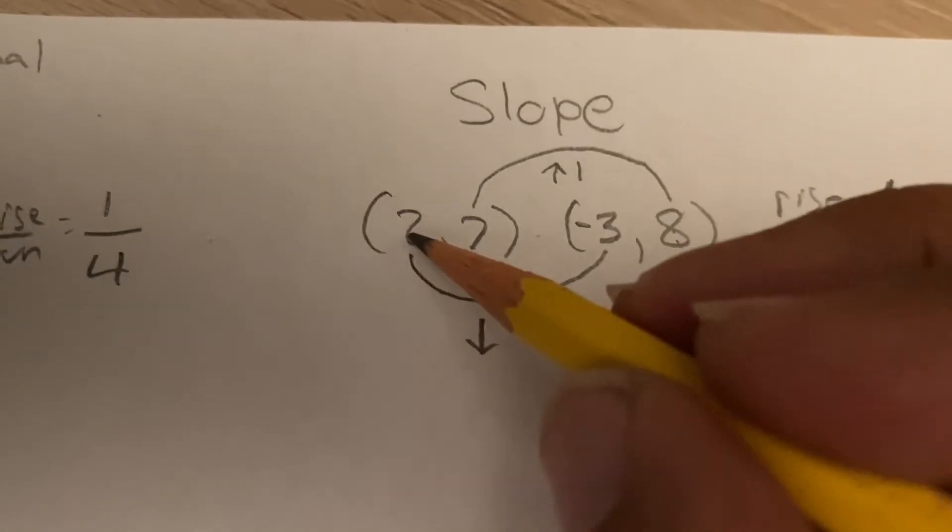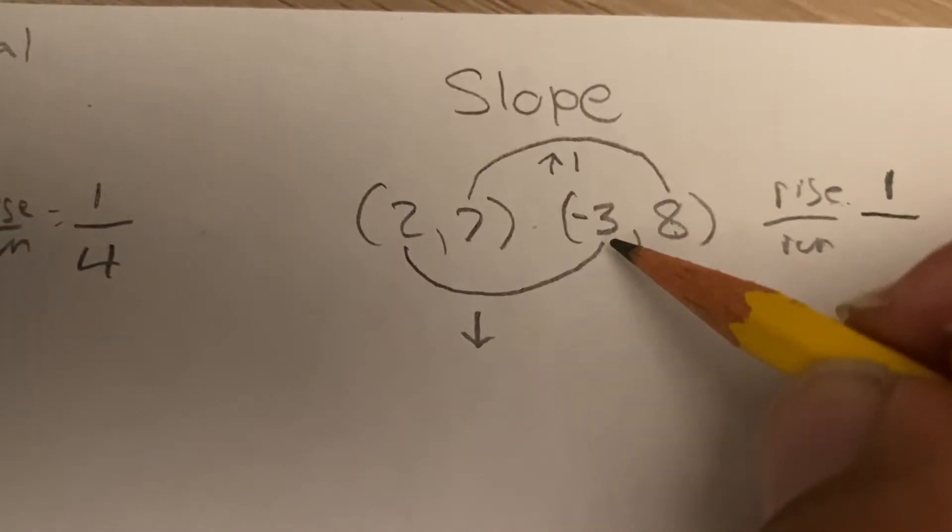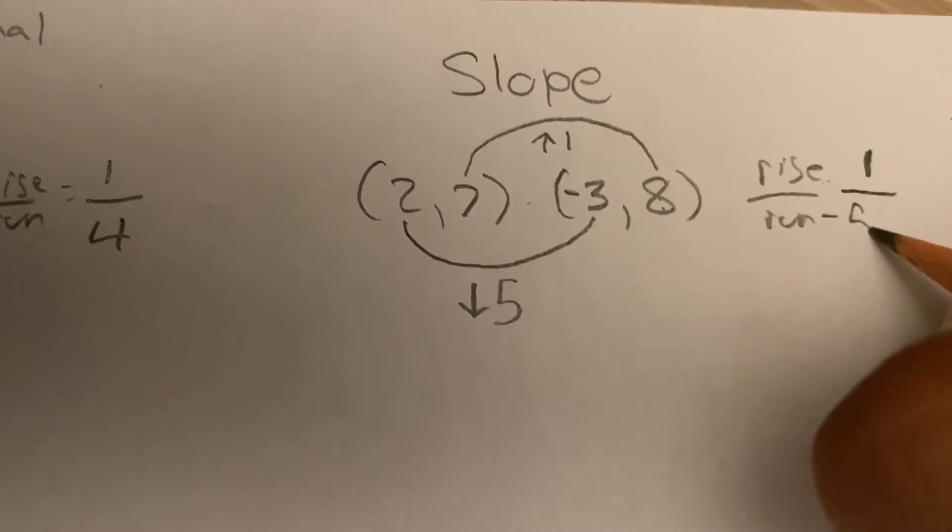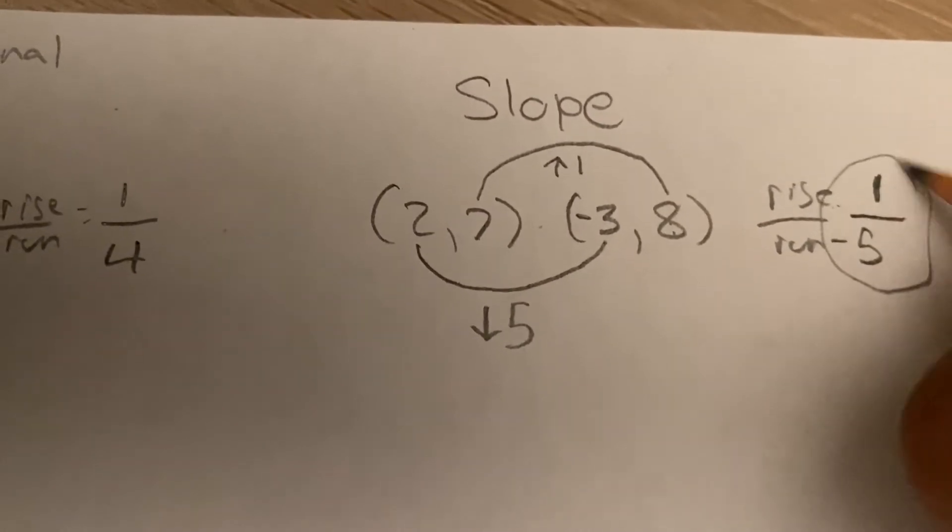How many steps does it take to get from 2 to negative 3? It's going to go down 5, which I'll mark as negative 5. And there we go. That's our slope.